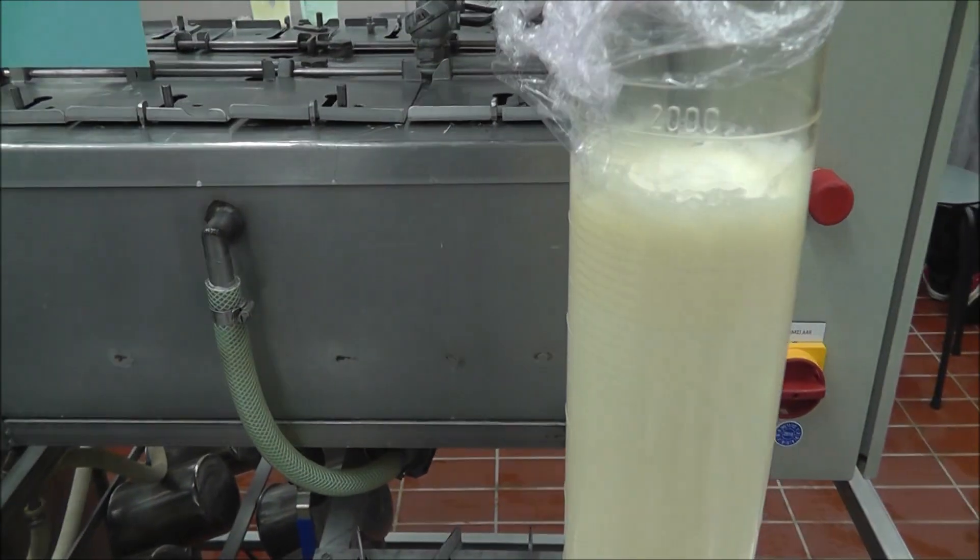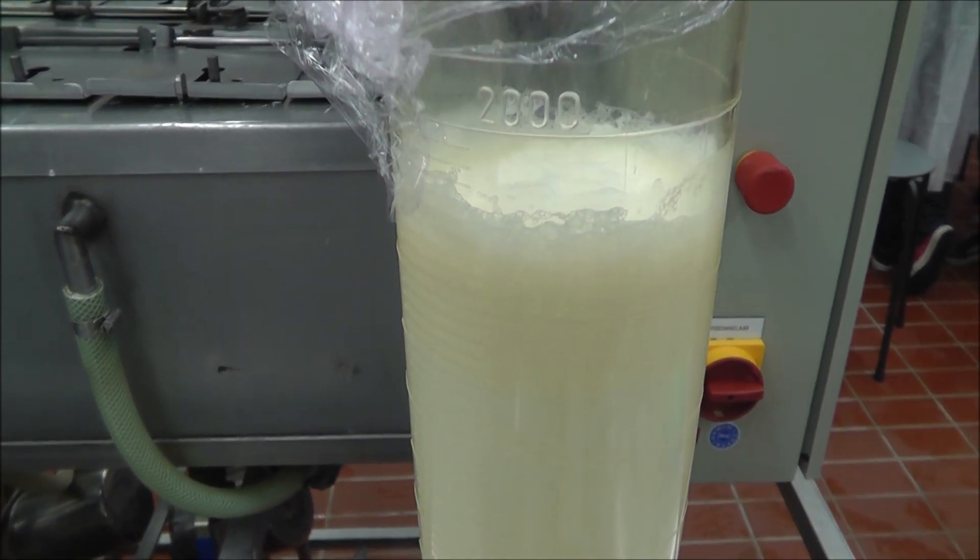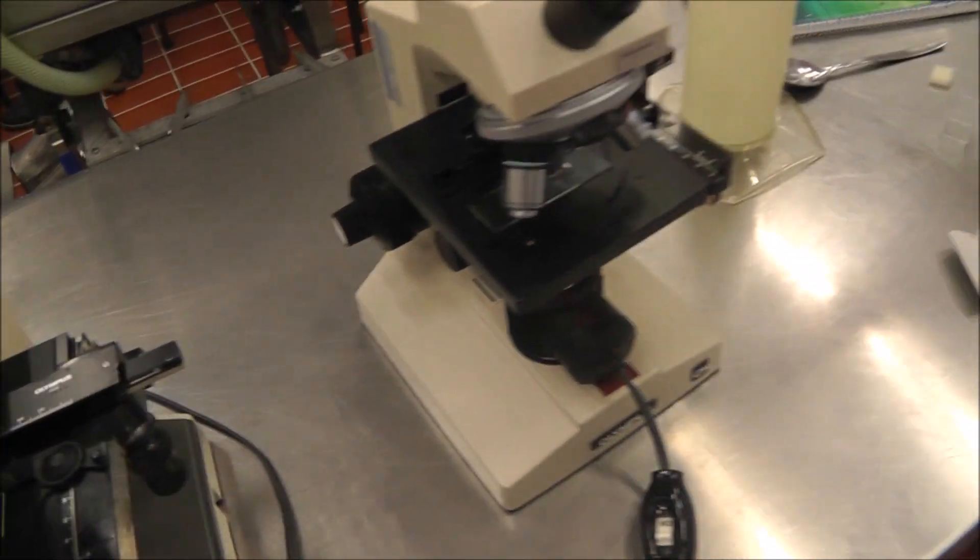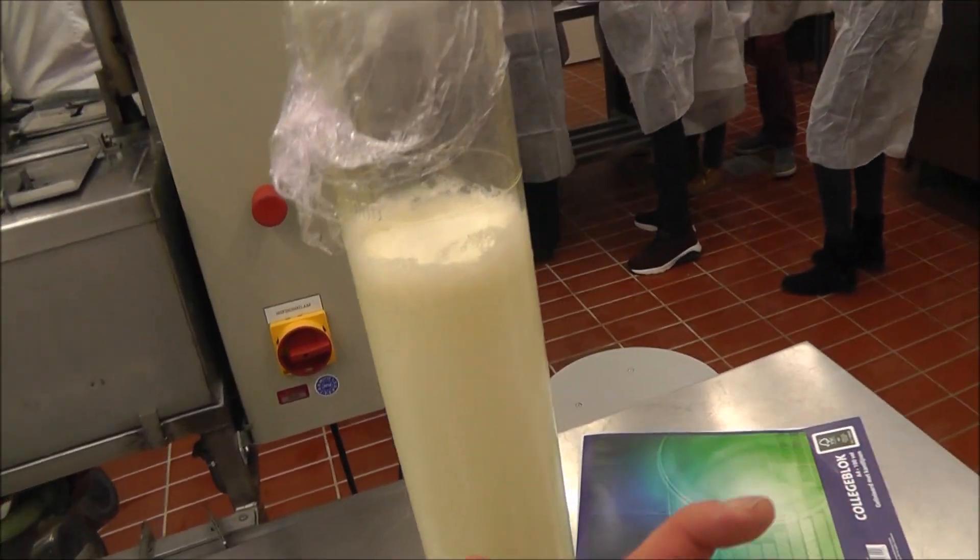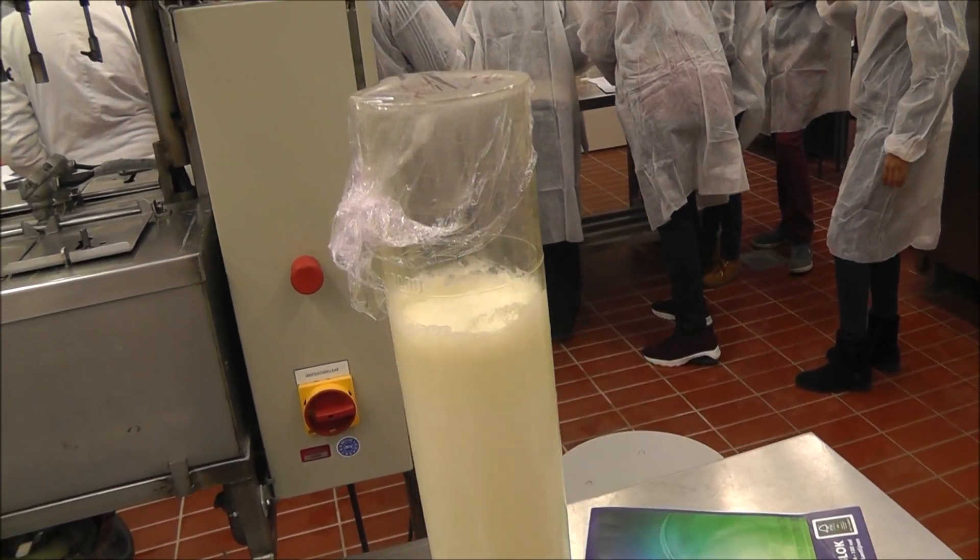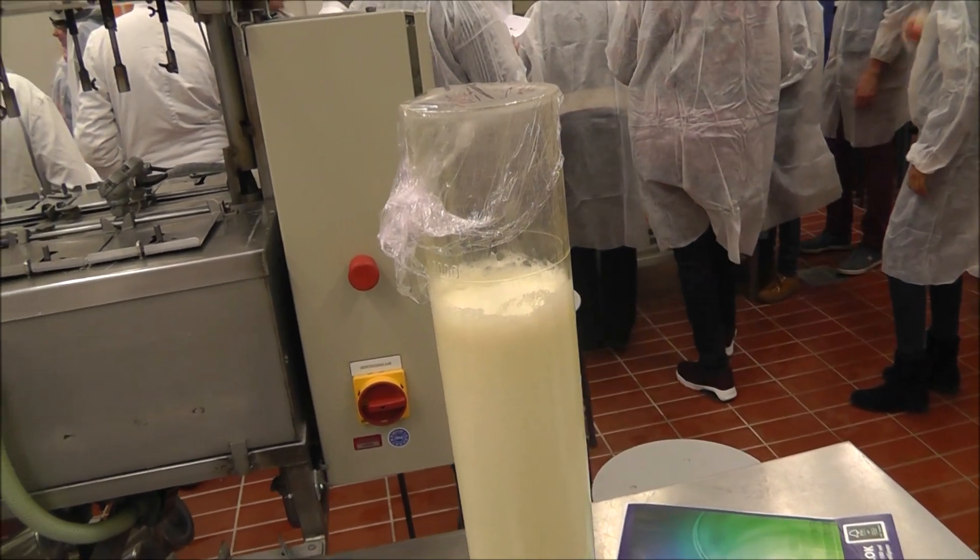And here we see the unprocessed milk. And on top of it is a layer of fat from the top of the cylinder. Because what happens if we would sell this in a store, in a supermarket, people would not like it to get milk like this. Because they think that's fat above and we don't like it.